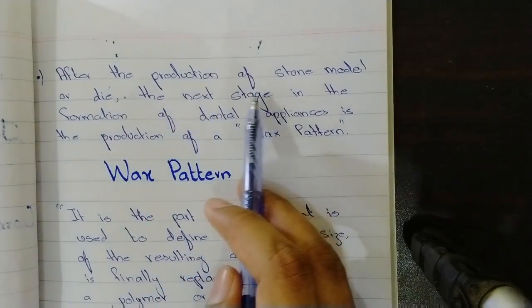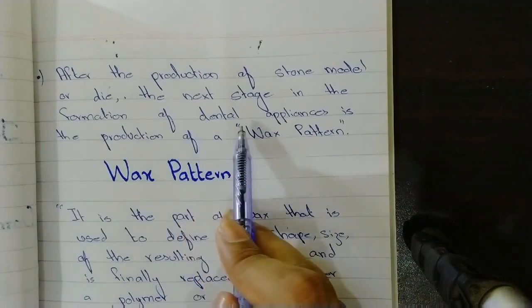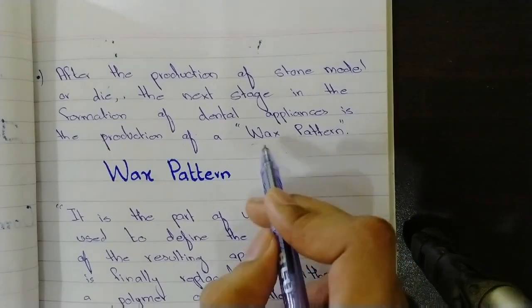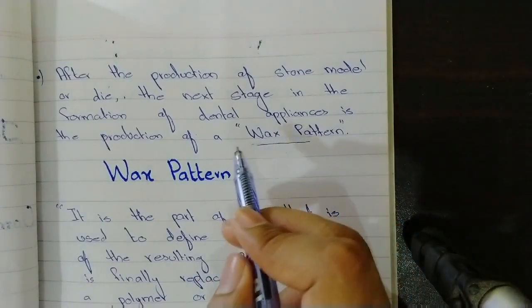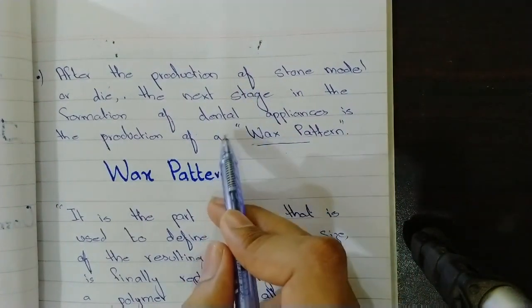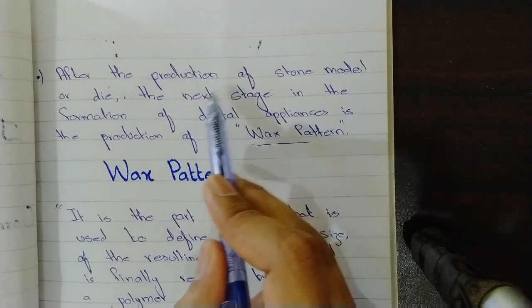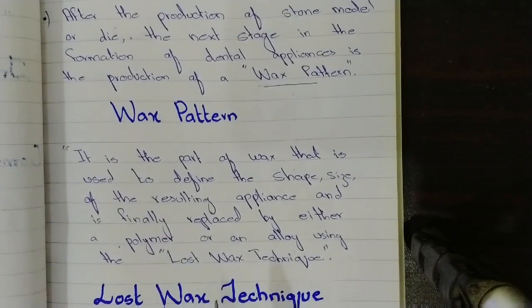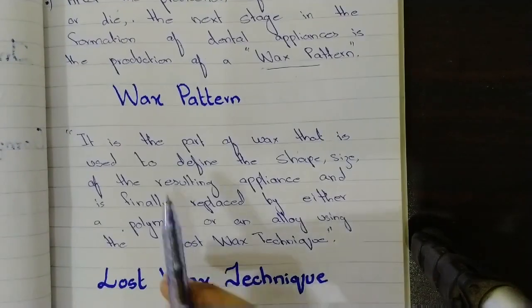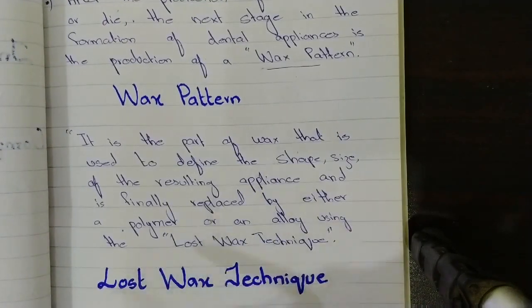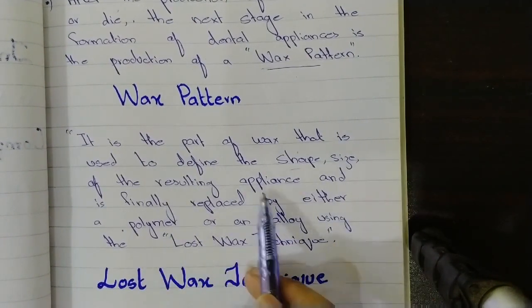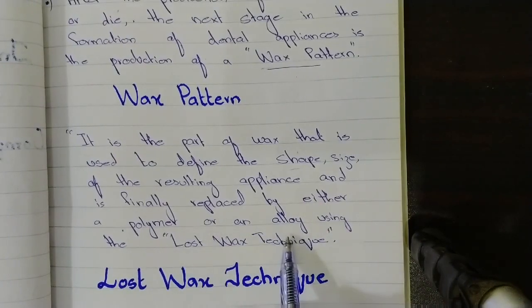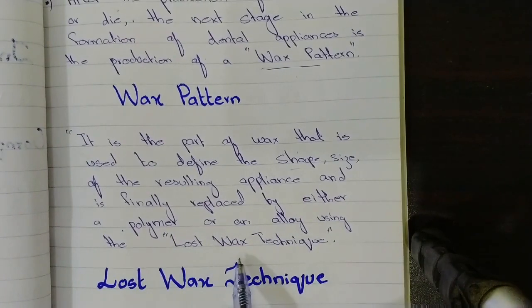After the production of stone model or die, the next stage in the formation of dental appliances is the production of waxes. As I mentioned earlier in the video, in the production of dental appliances there are certain steps that include the production of stone model or die and then the wax pattern. Now what is wax pattern? Wax pattern is the part of wax that is used to define shape, size of the resulting appliance and is finally replaced by either a polymer or an alloy using the lost wax technique.